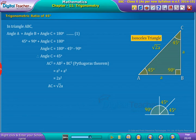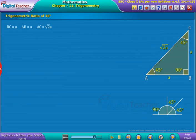In this way, in the given triangle, we have angle 45 degrees, opposite side BC equal to A, adjacent side AB equal to A, and hypotenuse AC equal to root 2A.